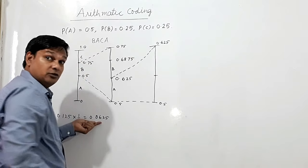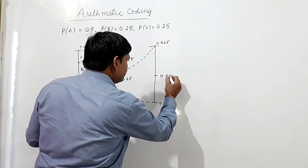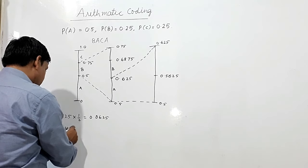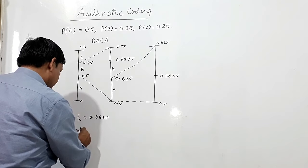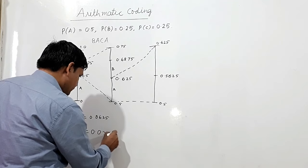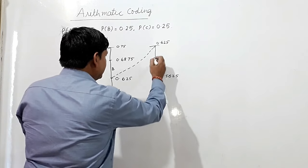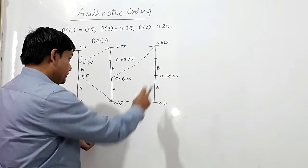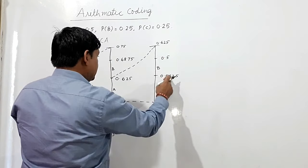The probability of B is one quarter, so I multiply 0.125 by one quarter, giving 0.03125. Adding this to 0.5625, B's sub-interval upper limit becomes 0.59375. So A's interval within the second step is [0.5, 0.5625) and B's interval is [0.5625, 0.59375).